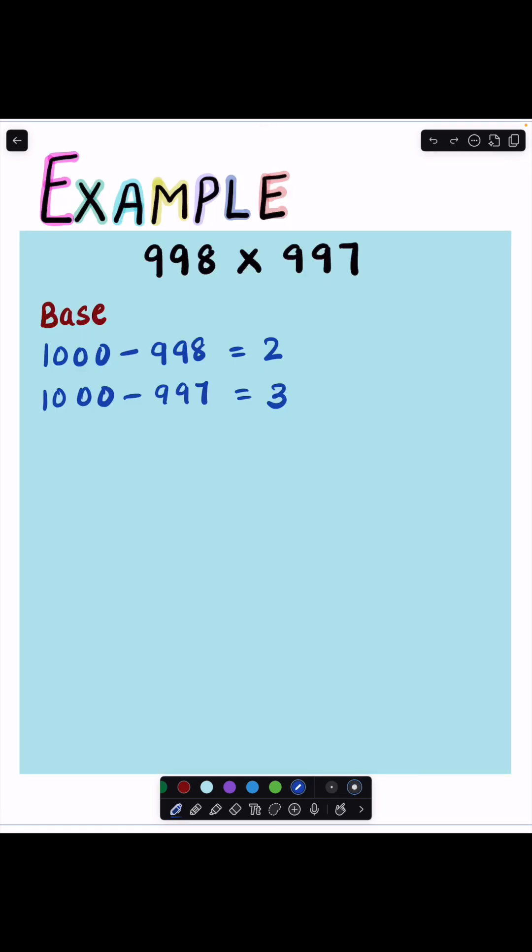In this trick, we get answers in two parts, right-hand side and left-hand side. So to get the answers of right-hand side, we have to check the numbers of zeros in the base.